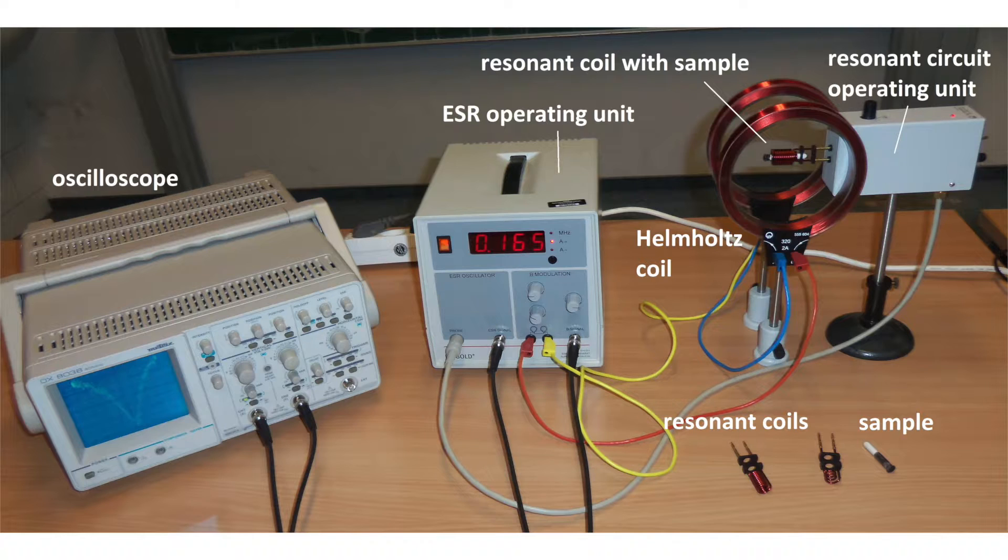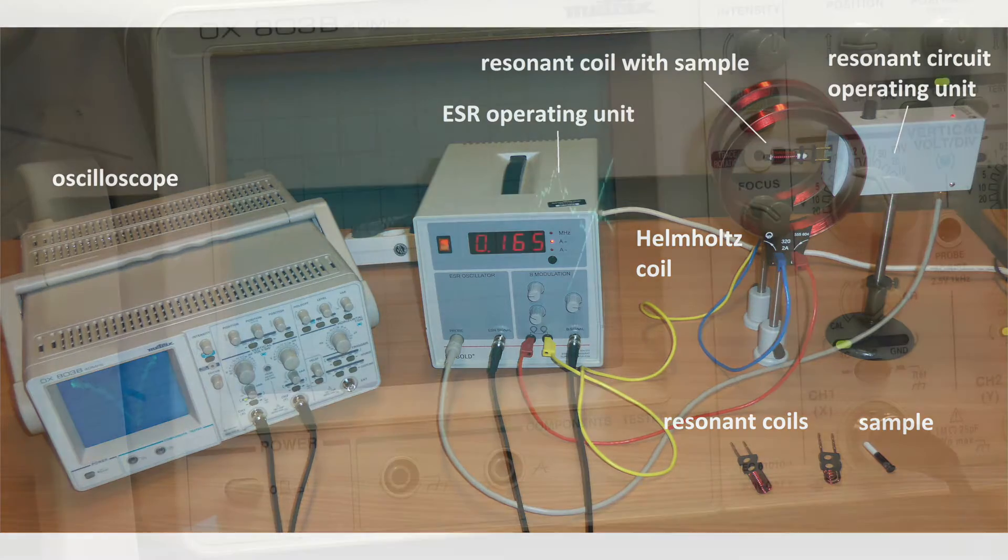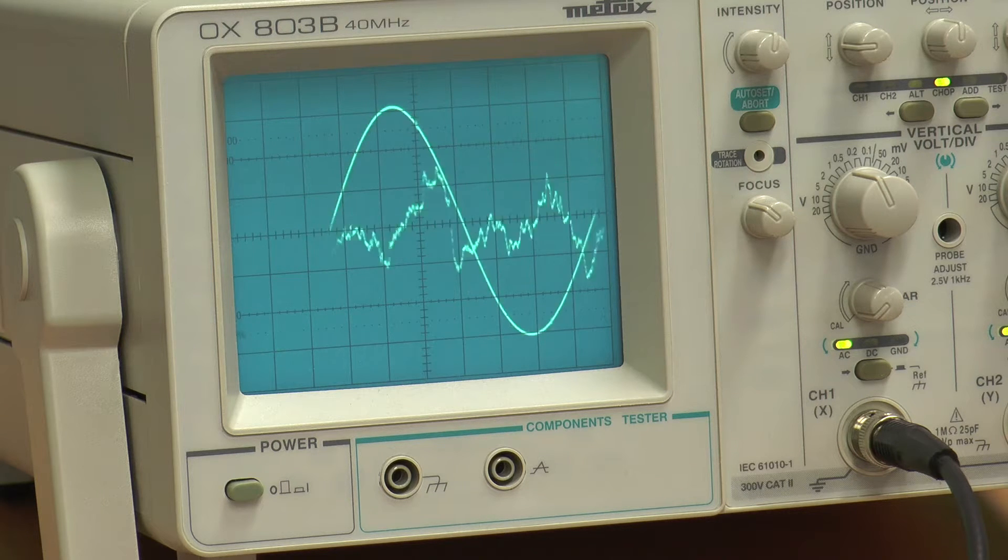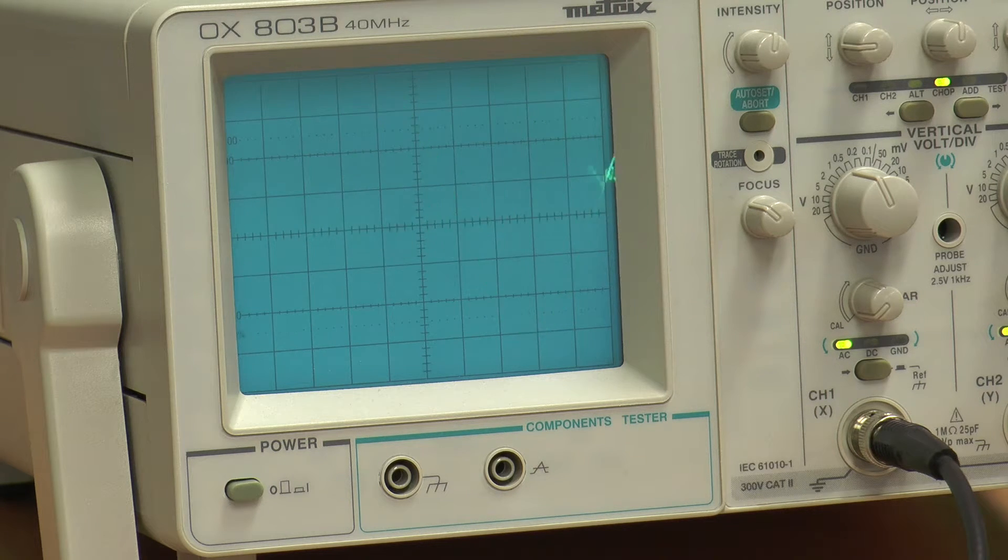In this experiment, a magnetic field in the millitesla range is generated by the Helmholtz coil. The resulting resonance frequency can be generated using a resonance coil and the LC circuit operating unit. When resonance occurs, the energy is extracted from the LC circuit and the load manifests as a change in impedance, which can be measured by a change in the applied voltage.